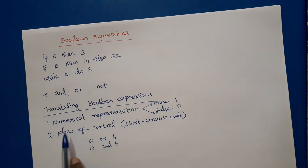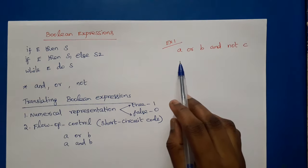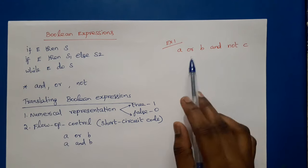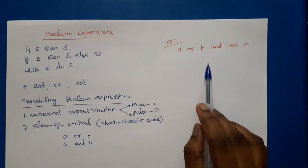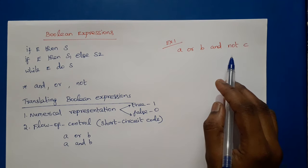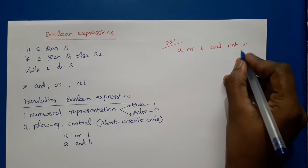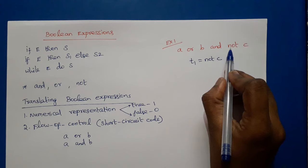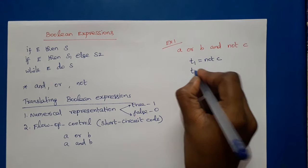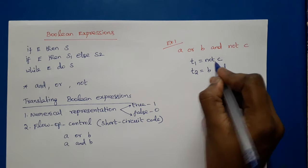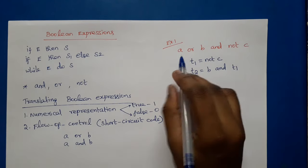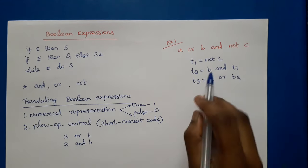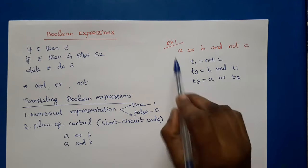In this video we are going to discuss numerical representation. Consider the first example: A OR B AND NOT C. NOT has the highest precedence, so NOT C is evaluated first and stored in T1: T1 = NOT C. Then B AND T1 is evaluated and stored in T2: T2 = B AND T1. Finally, OR is performed: T3 = A OR T2. This is the sequence of three-address statements for example 1.